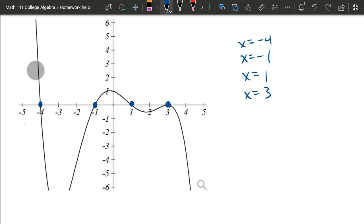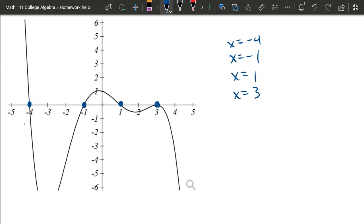Now we have to pay attention to how they actually cut through the x-axis. This is what I call a cross-intercept. It goes from the top to the bottom, crosses over. Negative 1 and positive 1 are also cross-intercepts. However, 3 is a bounce.